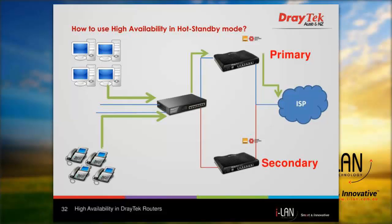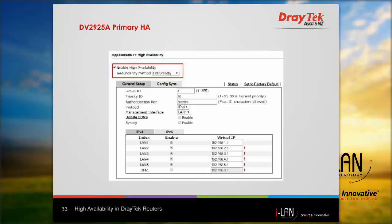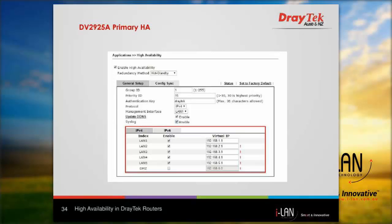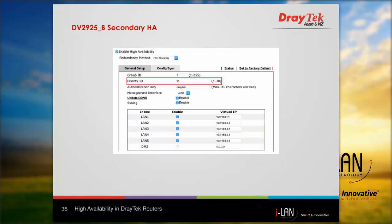On the primary router, select enable high availability and choose hot standby for the redundancy method. Enable the LAN subnets to join the high availability mode — any LAN subnet not selected will not be served with hardware redundancy. Under virtual IP, assign the corresponding IP gateway for the subnet. We also need to configure high availability on the secondary router; the priority value should be lower than the primary router, and other settings should be the same.